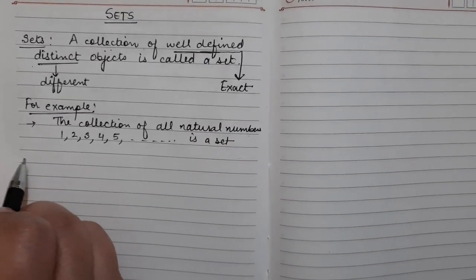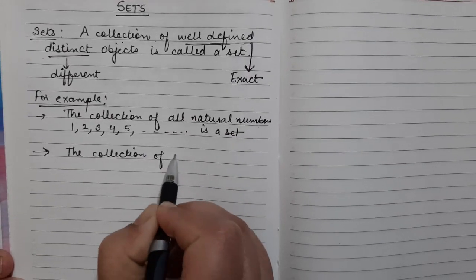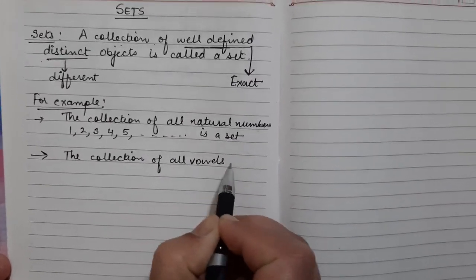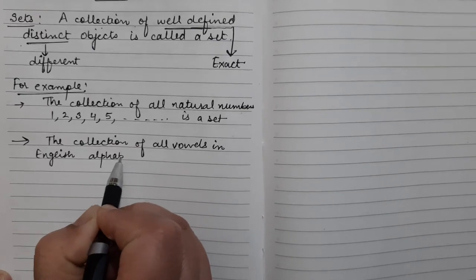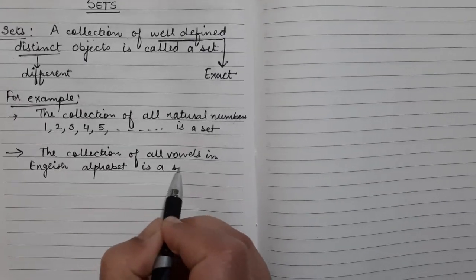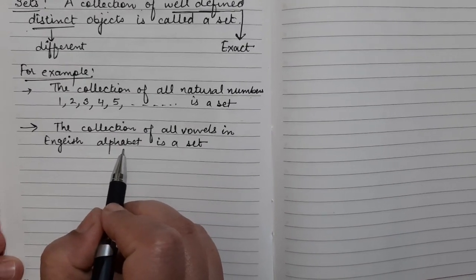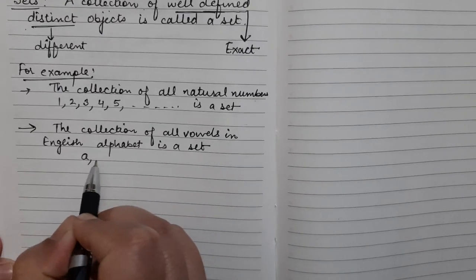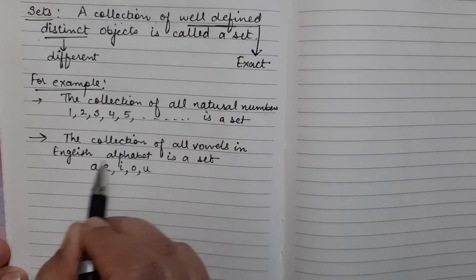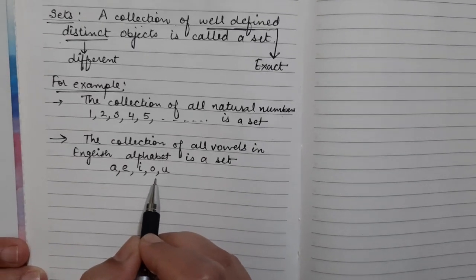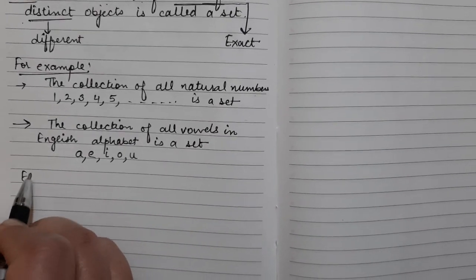Let's take another example. The collection of all vowels in the English alphabet is a set. We know that in the English alphabet there are vowels and consonants. The vowels are A, E, I, O, U — only these 5 are the vowels. So this is a collection of vowels, which is a set.